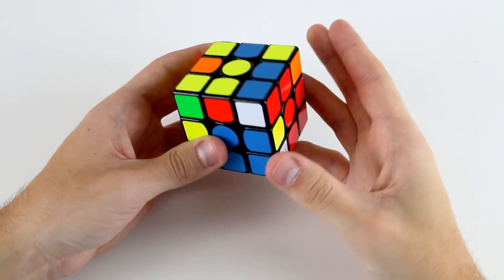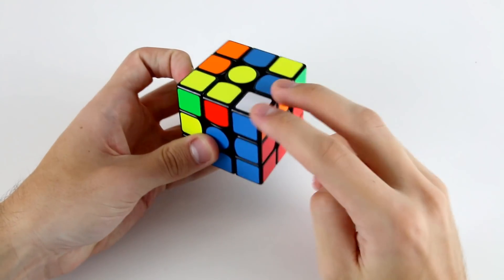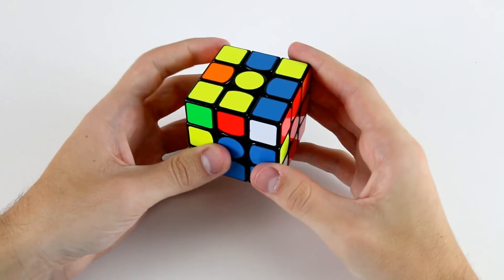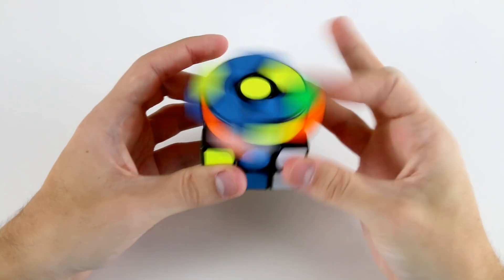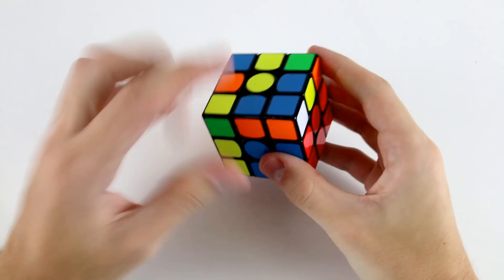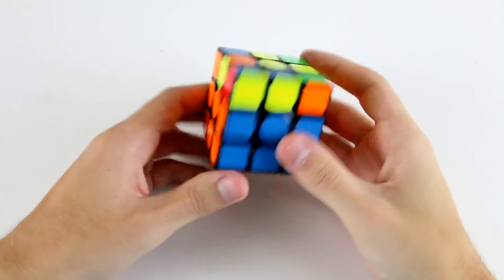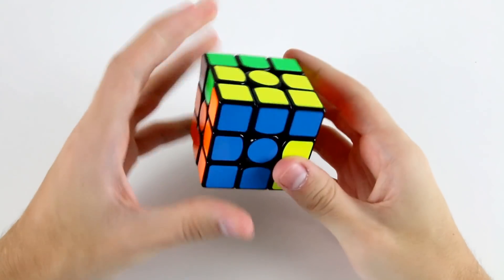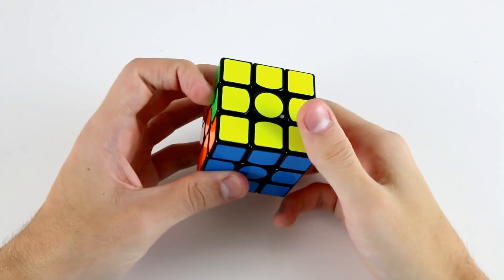Then I've got these two, and instead of doing a u, r, u', r', because that gives me a really bad case, I can go u2, r, u2, r', and then my last f2l pair will be paired up. Then I've got OLL, and then PLL.